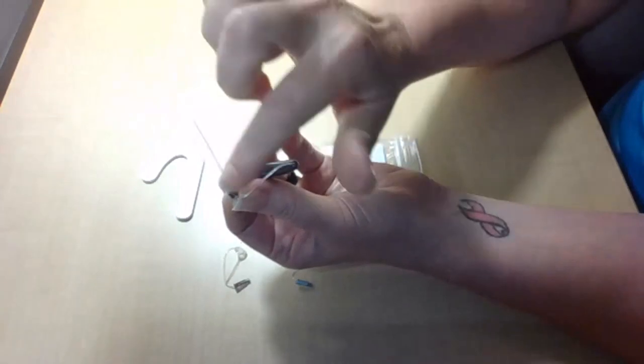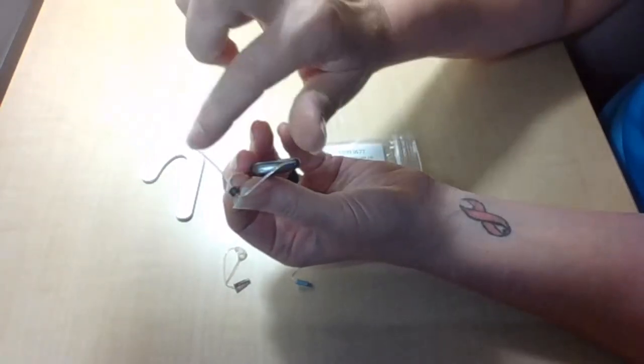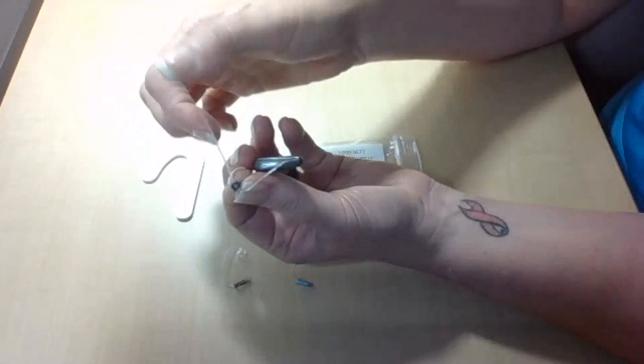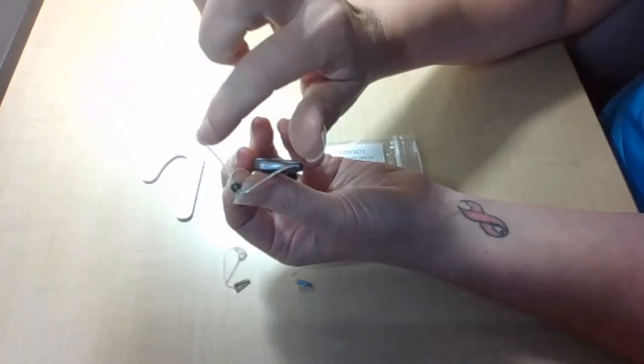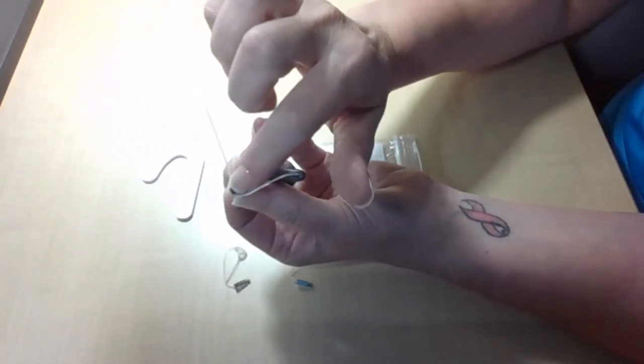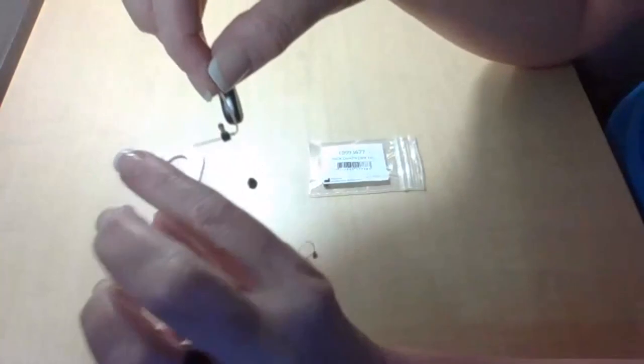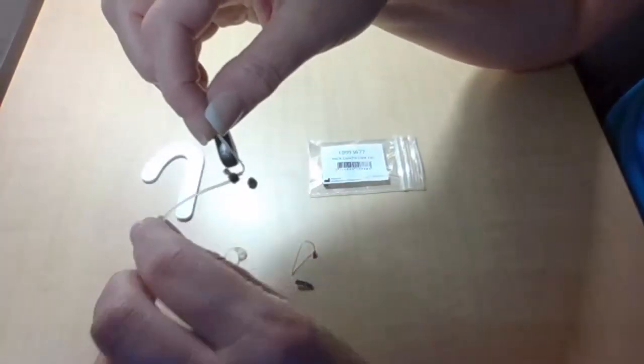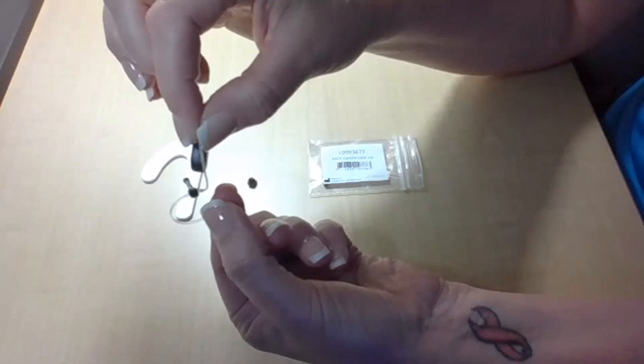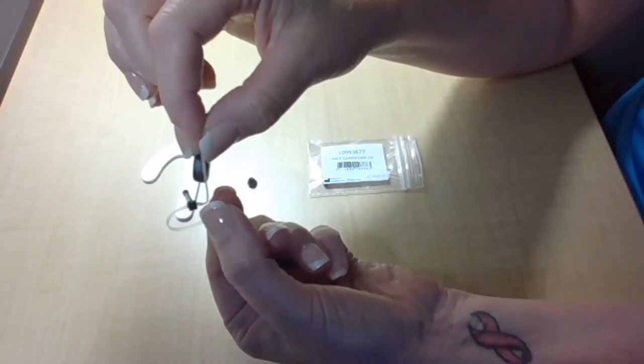Again, when you look at how that ConchaLock looks when you pop it on there, it does come straight across from where that receiver wire attaches to the base of the receiver. When it's in the patient's ear, that's then going to be able to loop around, like so, and hold that into the ear like a kickstand.